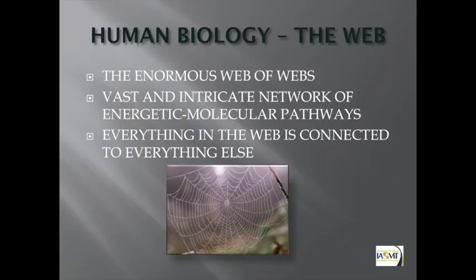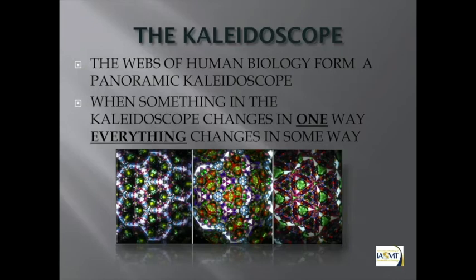Human biology is really incredible — it's enormous webs of systems, totally integrated. Your body is not separate pieces; everything is connected to everything else. When I was in anatomy school, every little thing had a name, but the anatomist game is playing with labels. Living human beings — it's all one thing, a kaleidoscope. The web of human biology forms a panoramic kaleidoscope: one thing happens in one place, it affects everything. Anything you do as a dentist affects everything. I hurt my little toe; a week later my hip is killing me because you're corking and compensating.